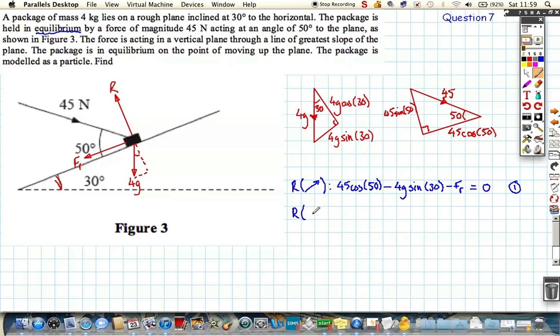If we resolve perpendicular to the plane, we've got R acting straight up. We've got this component of the 45 acting below the plane because it's pushing it into the plane, so it's minus 45 sine 50. And we've also got a component of weight, which is this component here—minus 4g cosine 30. Again, this is equal to 0. Let's call this equation 2.